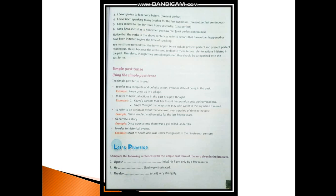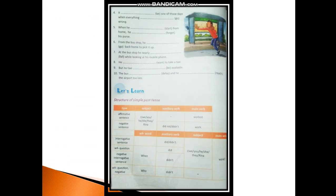Now let's do this practice exercise. Complete the following sentences with the simple past form of the verb given in the brackets. 'Jignesh missed his flight only by a few minutes. He felt very frustrated. The day started very strangely. It was one of those days when everything went wrong. When he started from home, he forgot his purse. From the bus stop he went back home to pick it up. At the bus stop he nearly fell while looking at his mobile phone. He wanted to take a taxi but no taxi was available. The bus delayed and he reached the airport too late.'